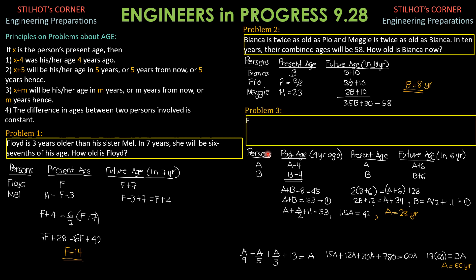Then, for problem 3. 4 years ago, the sum of the ages of A and B was 45. 6 years from now, twice B's age will be 28 more than A's age by then. How old is A now? So, there are 2 persons, A and B. Their past age, which was 4 years ago, would be present age of A is A and that of B is B. And 4 years ago, A was A minus 4. B was B minus 4. And it is mentioned here that 4 years ago, the sum of the ages of A and B was 45. So, meaning to say, if we add these ages, A plus B minus 8 equals 45. So, A plus B equals 53. Call that equation 1.